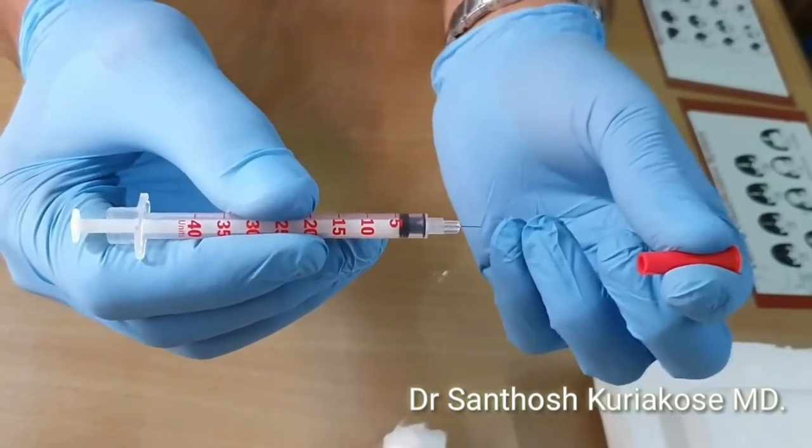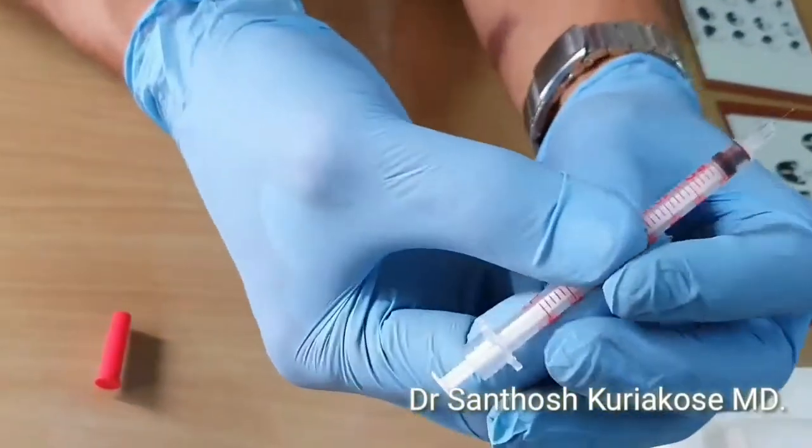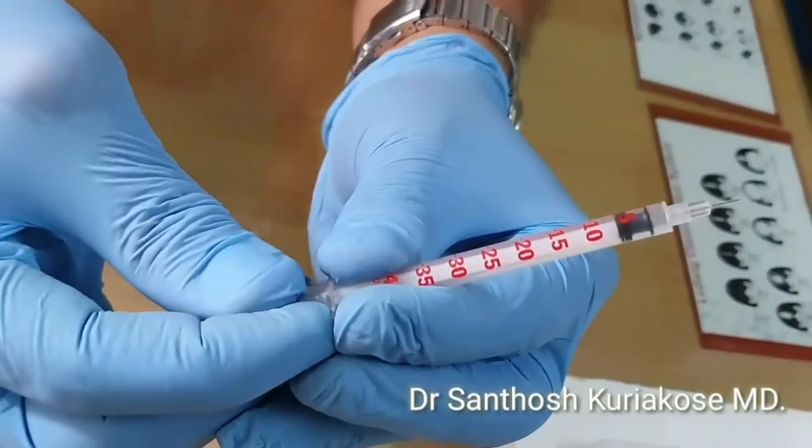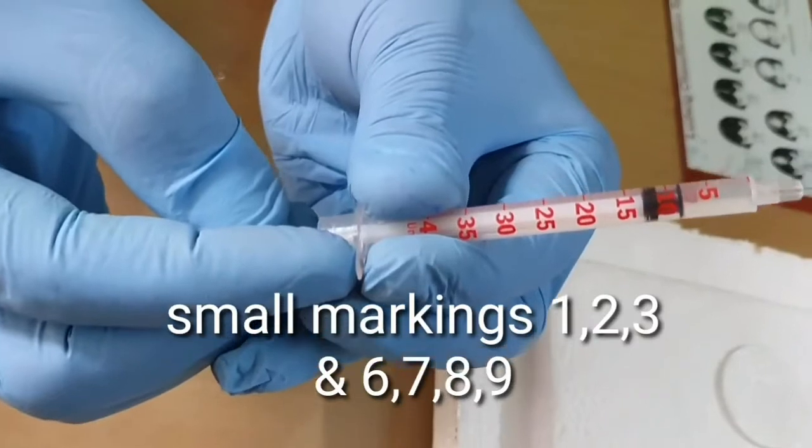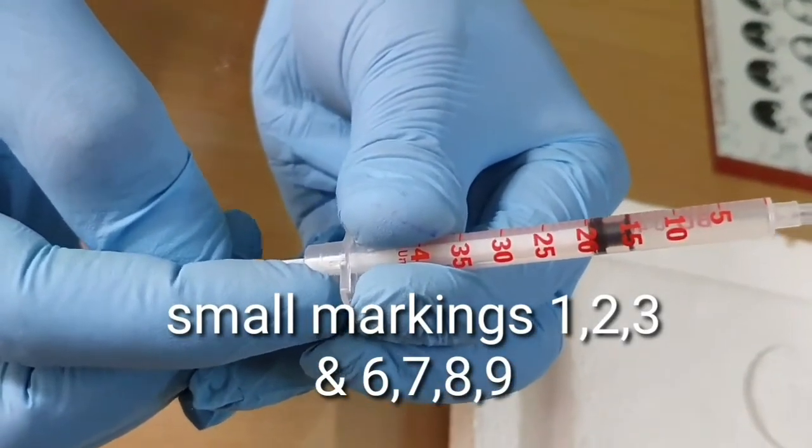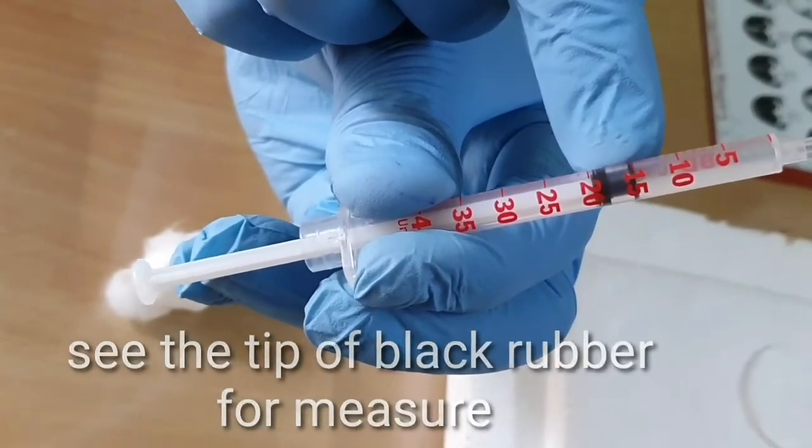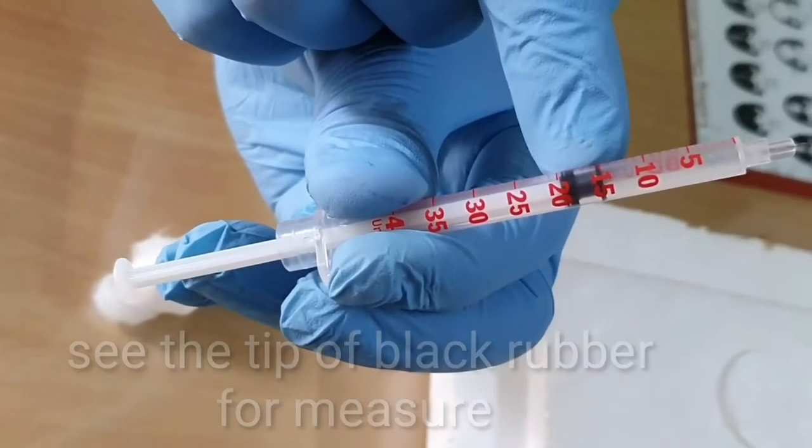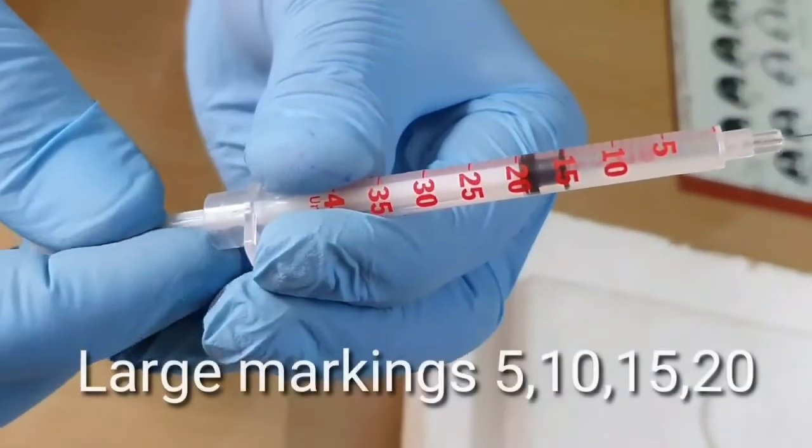Now if you see on the syringe, you can see markings. There are larger markings where we have 5, 10, 20 like that, and we have smaller markings in between. The markings are calculated or measured by the tip of the rubber black rubber plunger which is there inside.